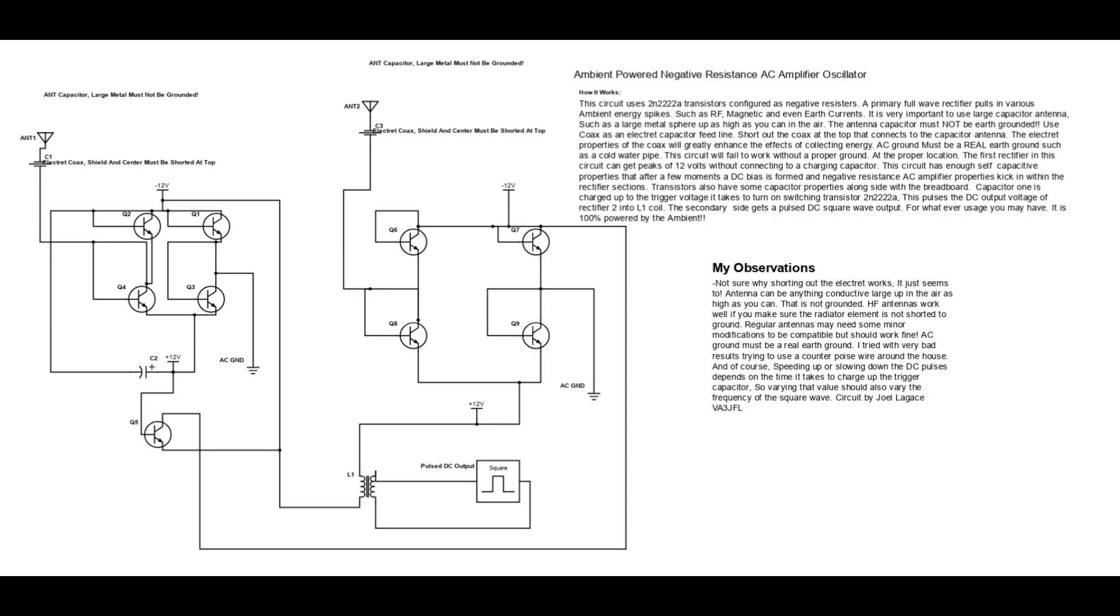My observations, I am not sure why, but shorting out the electric works, it seems to. Antennas can be anything conductive, large up in the air as high as you can, that is not grounded. HF antennas work well if you make sure the radiator element is not shorted to ground.